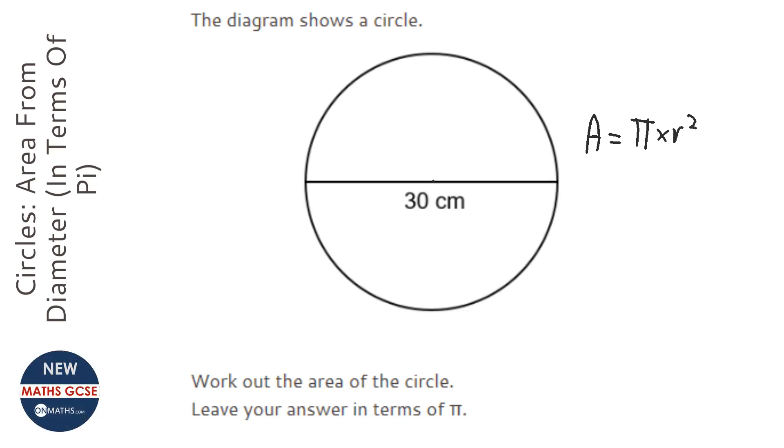Now we're given a diameter here because it goes all the way across the circle. So we need to find out what the radius is first. To do that we just halve the diameter. So 30 divided by 2 is 15.